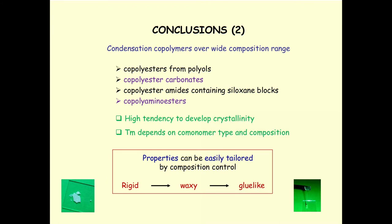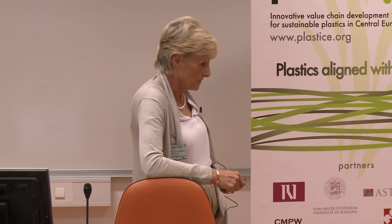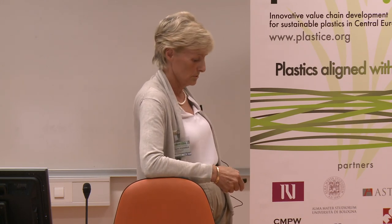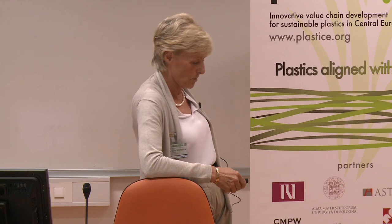We also analyzed many different types of co-polymers — I showed examples of carbonates and amino esters. In all cases, high crystallinity is maintained with a melting temperature that varies with composition. Properties can be easily tailored by controlling composition, which in turn is controlled simply by the feed. Materials can range from rigid to glue-like to waxy.